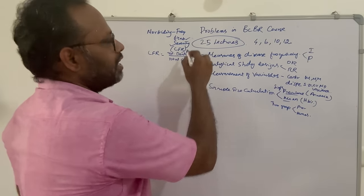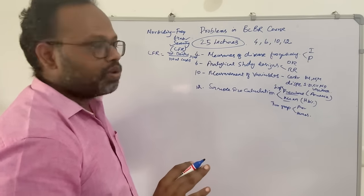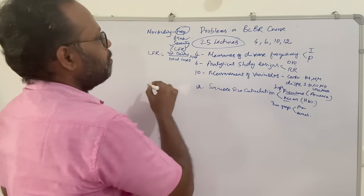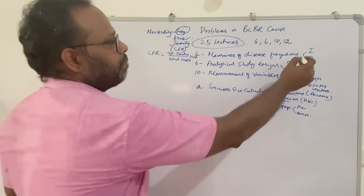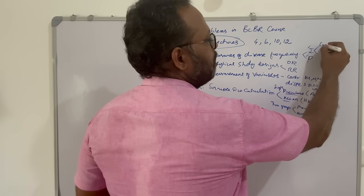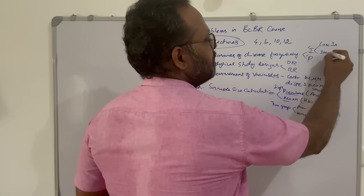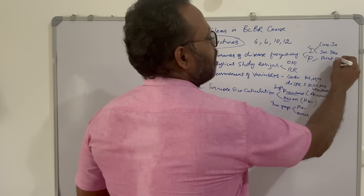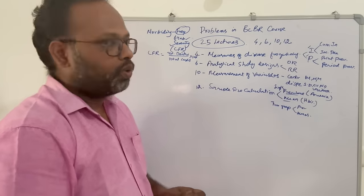Disability will be disability rate, but it is not mentioned in the course. The parameters of disease frequency are incidence and prevalence. Under incidence, we have two components: cumulative incidence and incidence density. For prevalence, we have point prevalence and period prevalence. We should know the formulas for these.